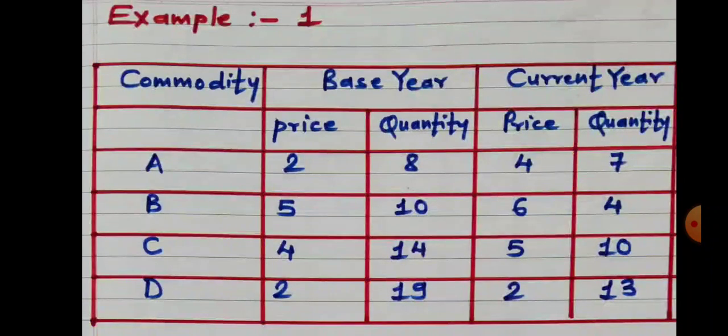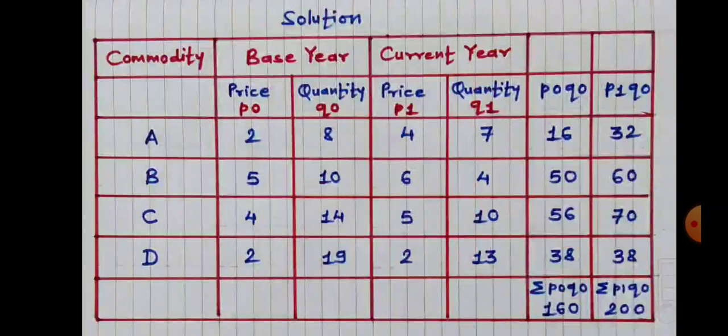Let us explain how to construct Laspeyres price index number with the help of an example. In this example, four commodities are given: Commodity A, B, C, D. In the second column, base year prices and quantities are given, and in the third column, current year prices and quantities are given. For this, we have to add two additional columns: P0Q0 and P1Q0.